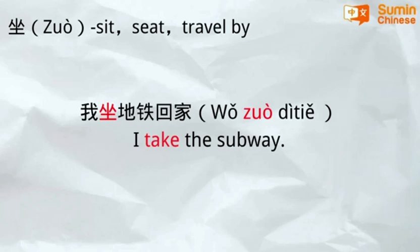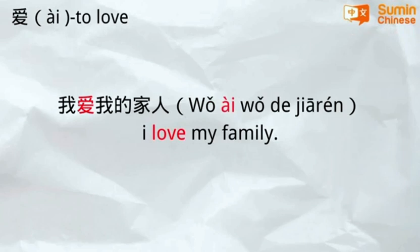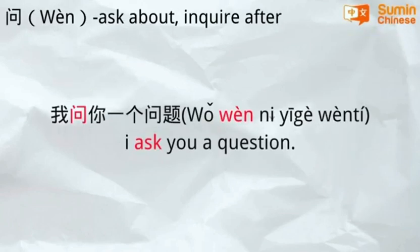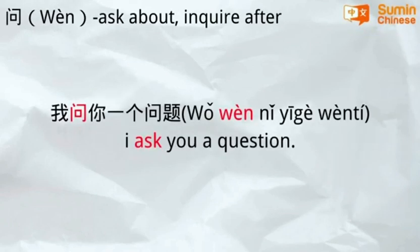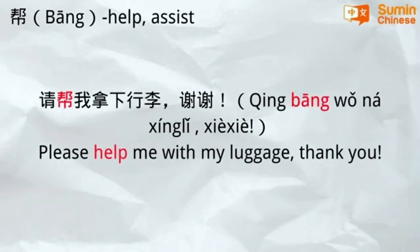Use the verb 坐 (to sit/take): 我坐地铁回家 — I take the subway home. Use the verb 爱 (to love): 我爱我的家人 — I love my family. Use the verb 问 (to ask): 我问你一个问题 — I ask you a question. Use the verb 帮 (to help): 请帮我拿下行李，谢谢 — Please help me get the luggage, thank you.